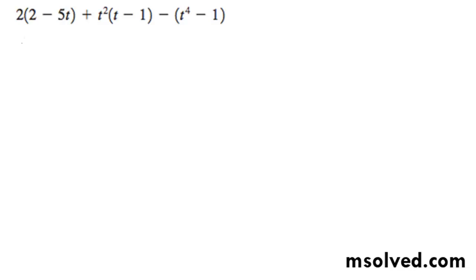I'm going to multiply this out. So I get 4 minus 10t plus t cubed minus t squared minus t to the fourth plus 1.